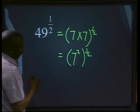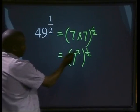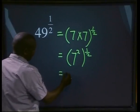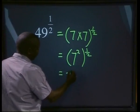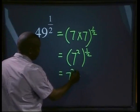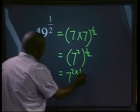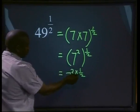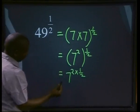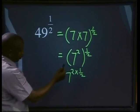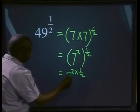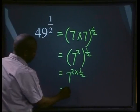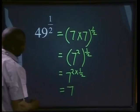We know one of our laws from raising a power to another power. This will be the same as 7 to the power 2 times 1 over 2. 2 times 1 over 2 will give us 2 over 2, which equals 1. So our answer will be equals to 7.